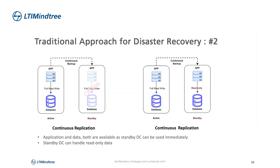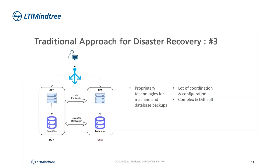The next approach was continuous backup, where with the help of some automation the standby infrastructure would come back online. Because of the continuous backup, there is very little chance of losing data. A slightly better approach was to have continuous backup with the standby environment active — not offline but active — allowing read-only operations. This achieved some degree of availability where users could still access the system but couldn't write data.